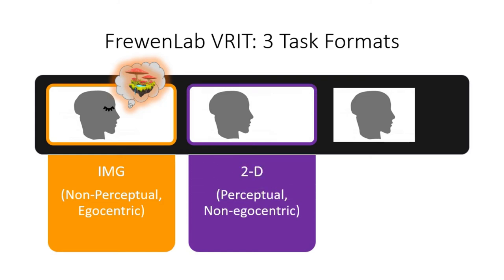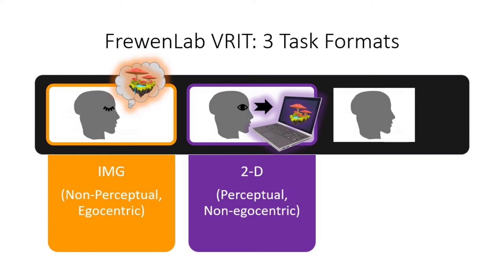Next, we have the two-dimensional experience, which is a perceptual one but typically a non-egocentric one. Here, with my eyes open, I might look at a laptop screen showing an image. Instead of imagining it, I see it right in front of me, but it's not as if I feel right inside that image. There's a barrier where it's contextualized within the laptop screen and I don't feel as if the real image is right in front of me — it's depicted within the medium of the laptop screen. So it's sort of non-egocentric but it is perceptual.